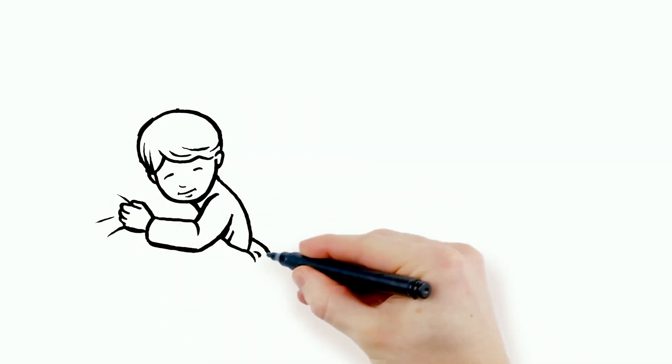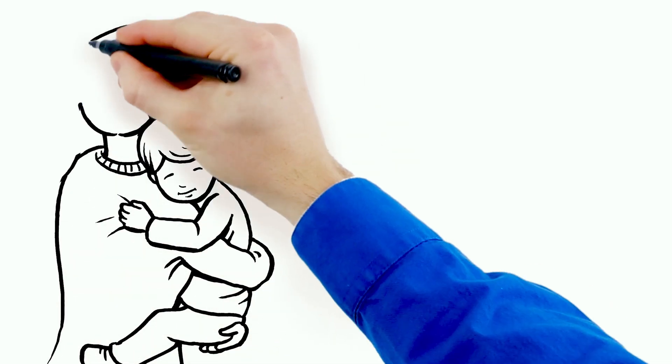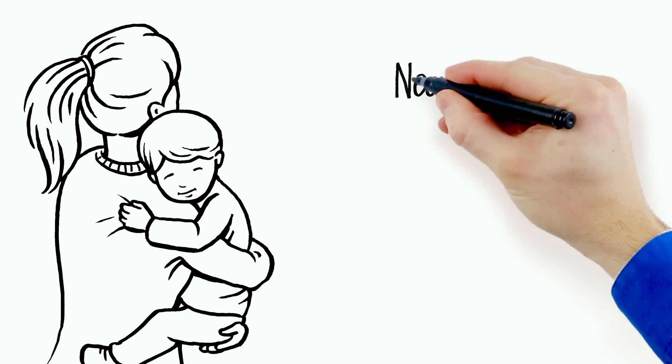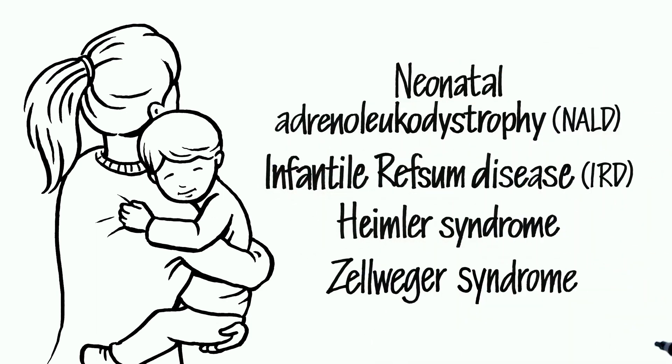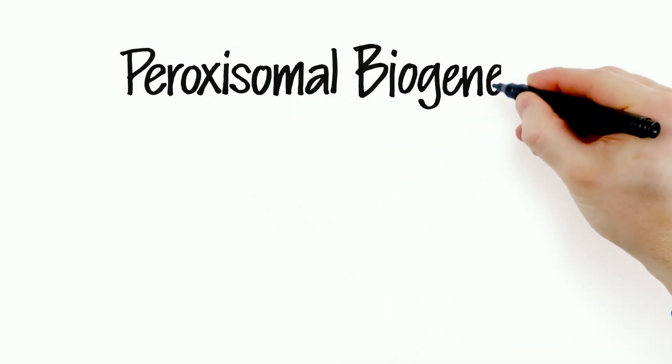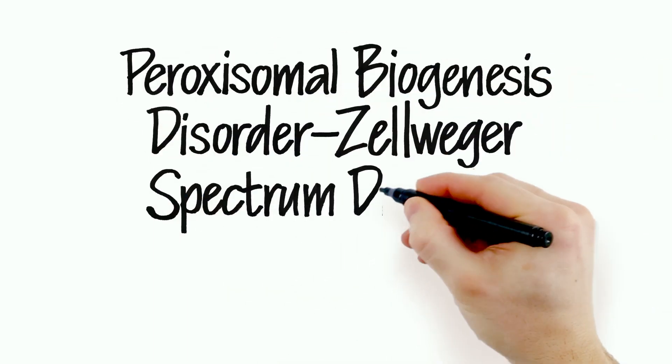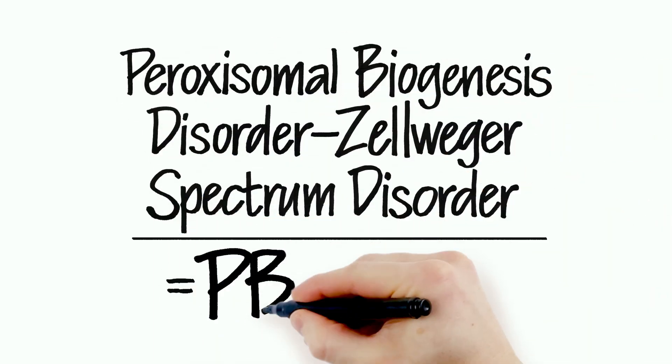Zellweger Spectrum Disorder, or Paroxysomal Biogenesis Disorder, abbreviated as PBD-ZSD, represent different names for the same disease, which we now call Paroxysomal Biogenesis Disorder, Zellweger Spectrum Disorder, or PBD-ZSD.